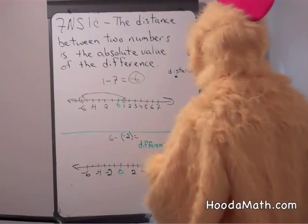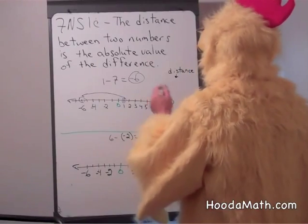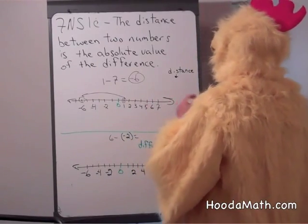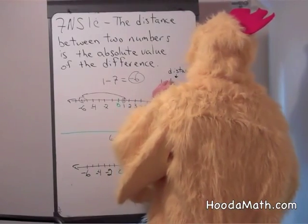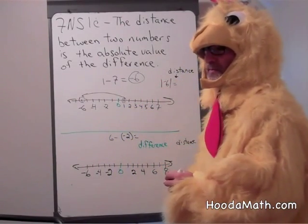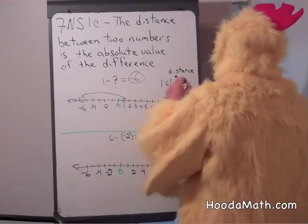The distance between one and seven should be the absolute value of negative six. Theoretically. The absolute value of negative six means how far is negative six from zero? It's six units.